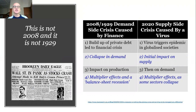Richard Murphy wrote a great blog piece explaining that this crisis has very little in common with what happened in 2008, or with the great depression of 1929. Both the 1929 depression and the 2008 great recession were demand-side crises triggered by a financial crisis resulting from an unsustainable build-up of private debt. Those financial crises — the 2008 one being much better managed than 1929 — led to a collapse in demand, which impacted production and the supply side of the economy.